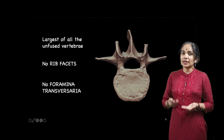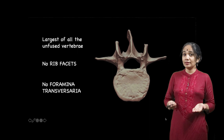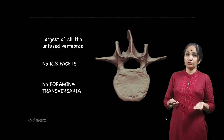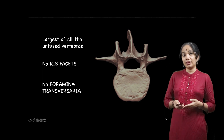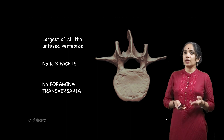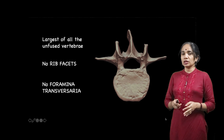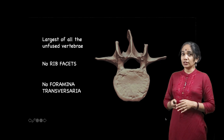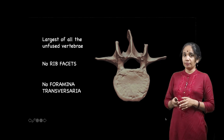We have cervical vertebrae which are not fused, thoracic vertebrae — 12 in number — which are also not fused, and then we have 5 lumbar vertebrae which are also not fused. The fused vertebrae are basically two: the sacrum and the coccyx. Today we will be talking about the largest of the unfused vertebrae, which is the lumbar.